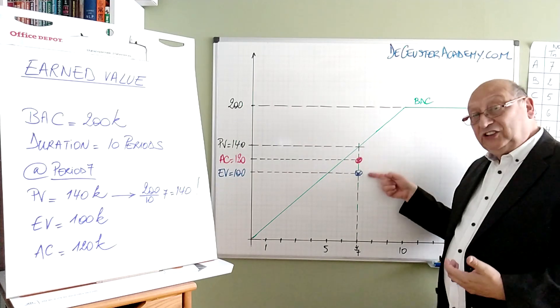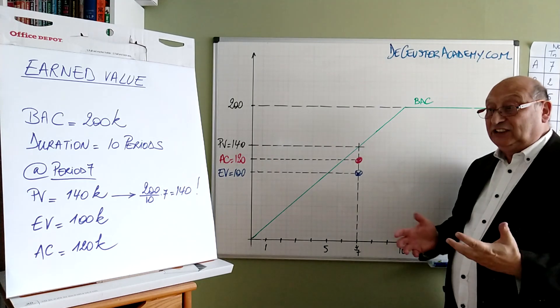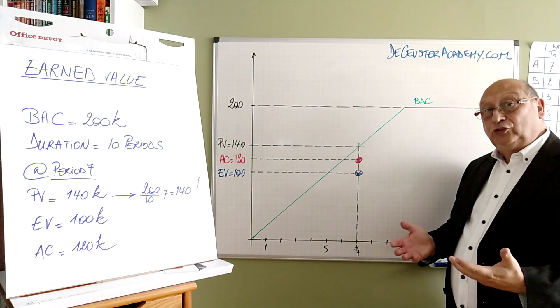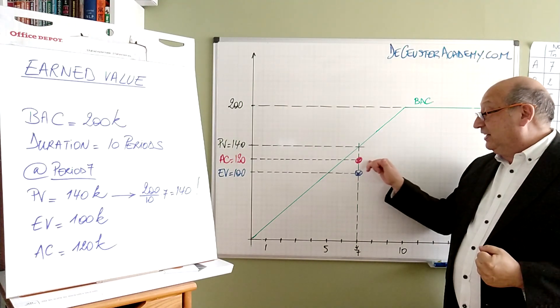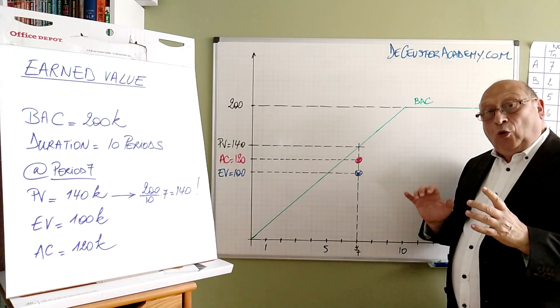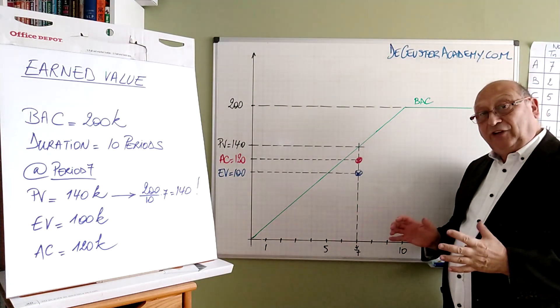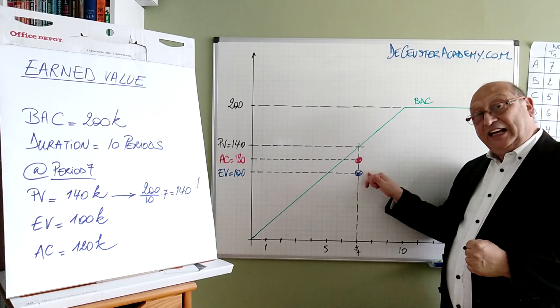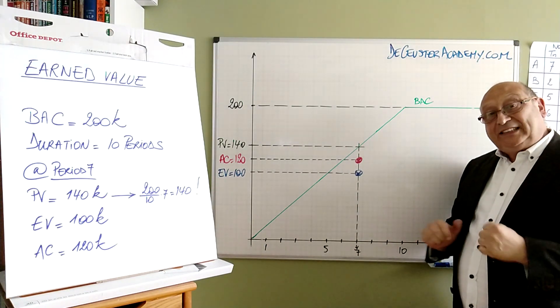And this difference is the schedule variance. The second parameter that we have, and that's typically the parameter we've been using before, is the actual cost. And the actual cost here is 120k. What can we conclude here? We can conclude that we are behind schedule and we are above budget.